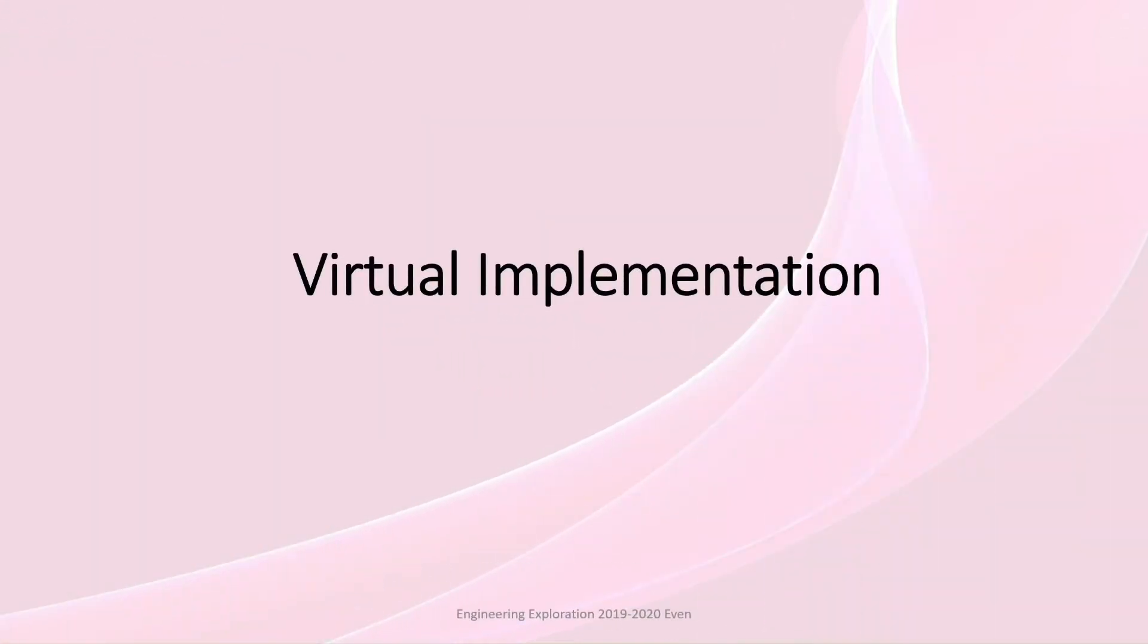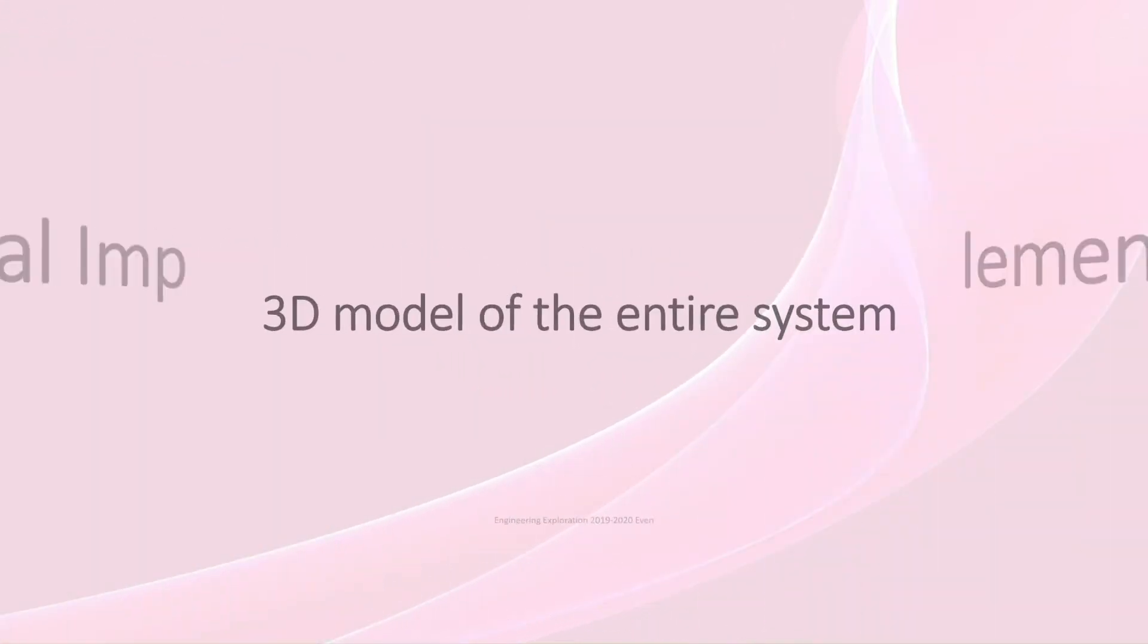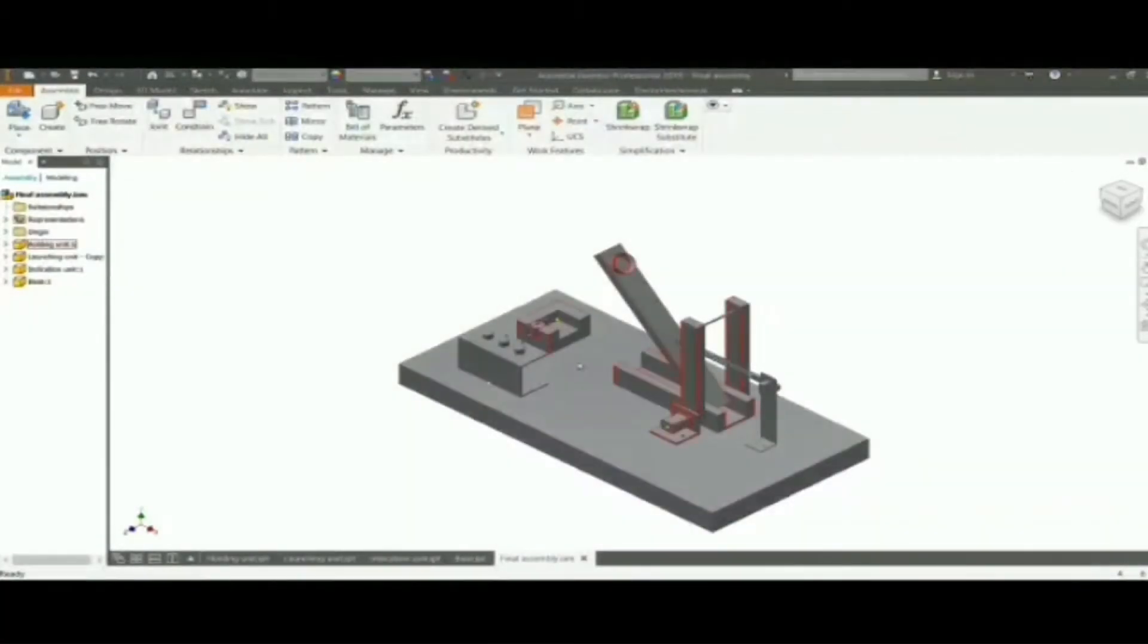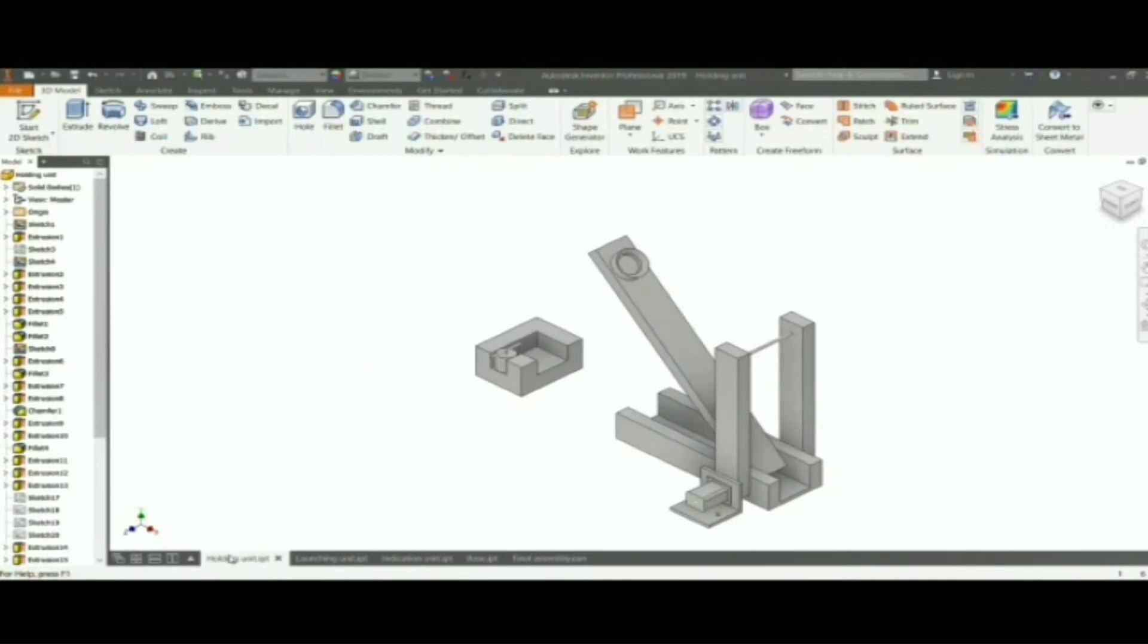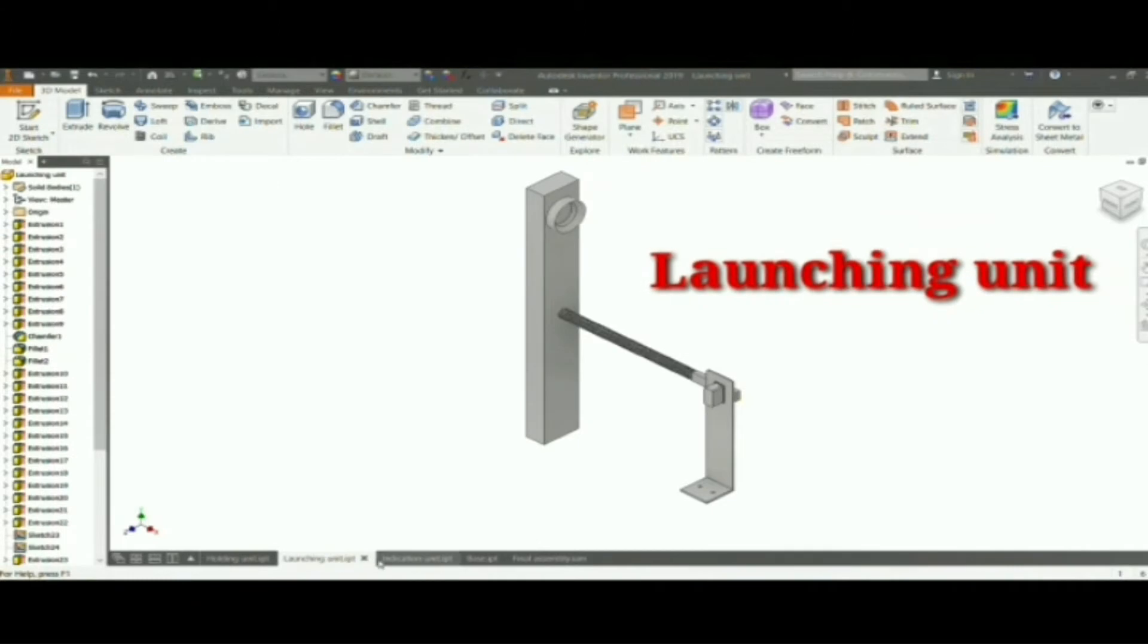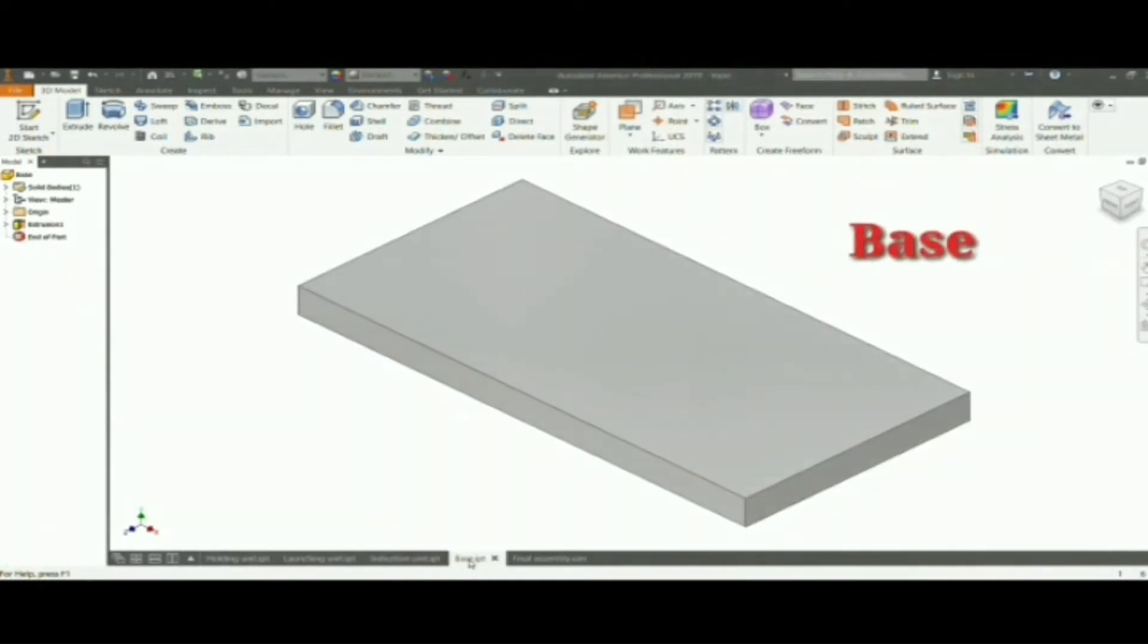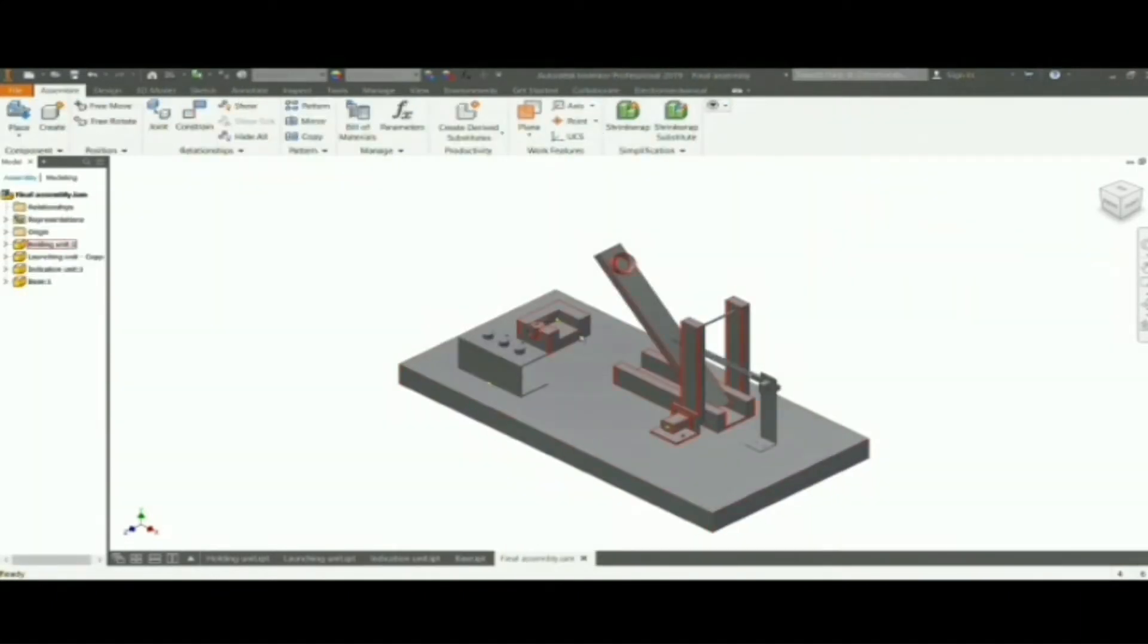Virtual Implementation. 3D model of entire system. These are the 3D models of our project. This is holding unit, this is launching unit, this is indication unit, and this is base. Our main concentration is on final assembly.